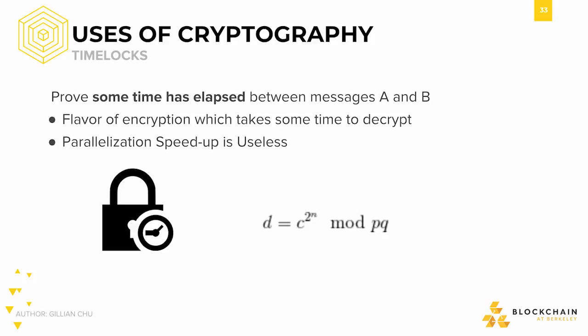The equation on the right demonstrates how we can do this. The value of n in the exponent is proportional to how much time it takes to decode, allowing us to easily adjust the functionality of this time lock to our specifications.